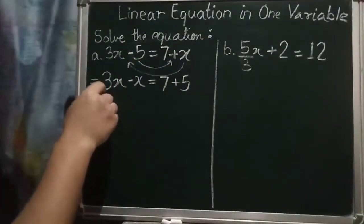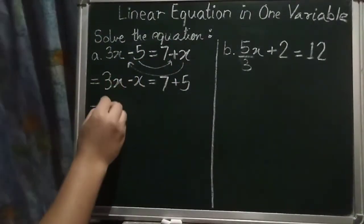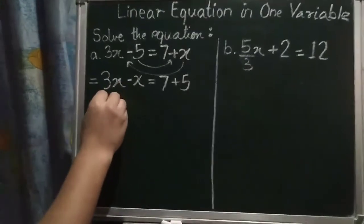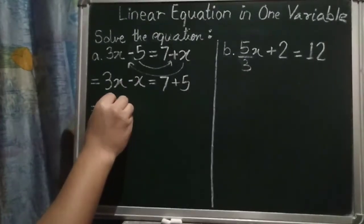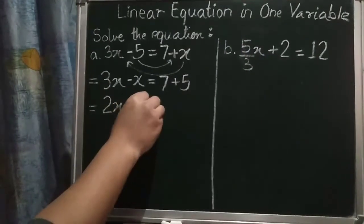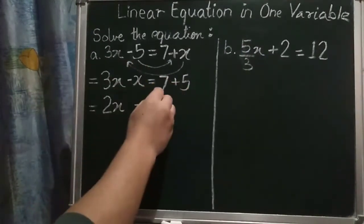So what happens now? 3x minus x is, 3 minus 1 is, 2x. And 7 plus 5 is, 12.